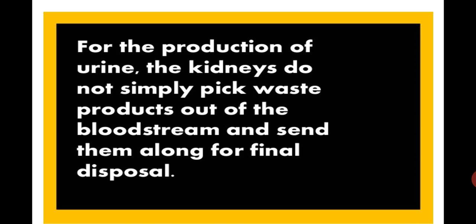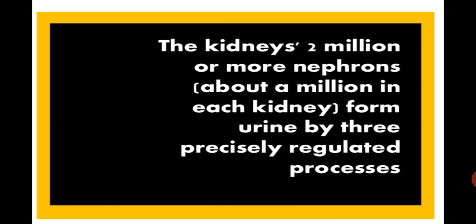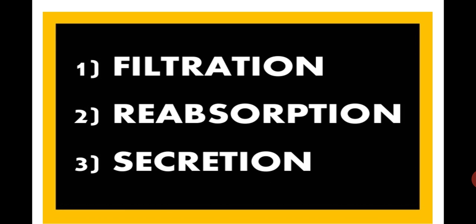For the production of urine, the kidneys do not simply pick waste products out of the bloodstream. It includes a precisely regulated process. The kidneys are made up of two million or more nephrons, and the urine is formed by three precisely regulated processes: filtration, reabsorption, and secretion.